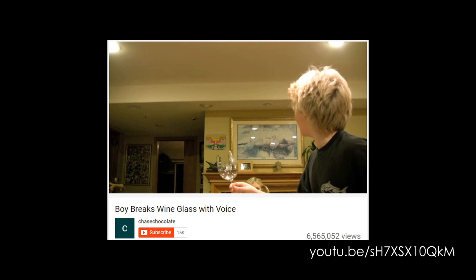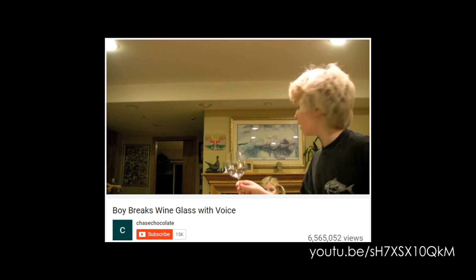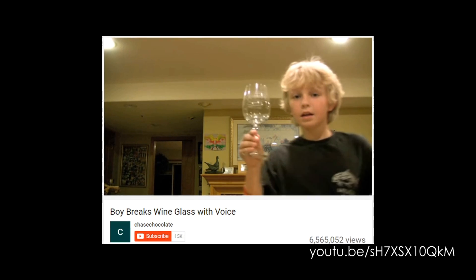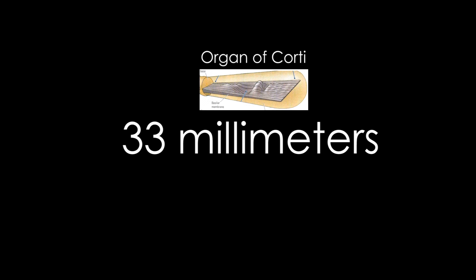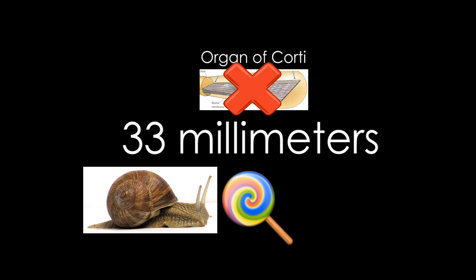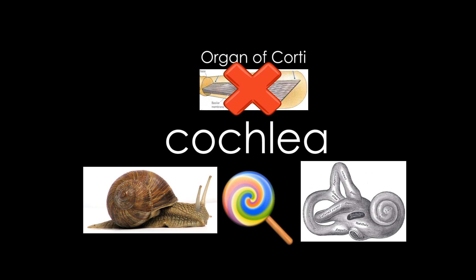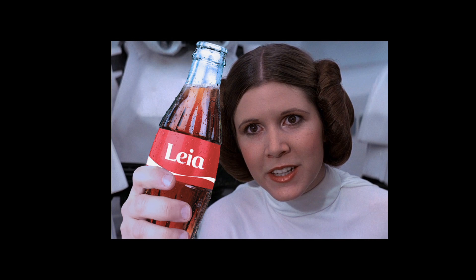Mom, I broke it! You did not. 33 millimeters — that's the length of the organ of Corti. However, it doesn't lie straight inside the ear, but rather neatly curled up into a snail-shaped structure called the cochlea.